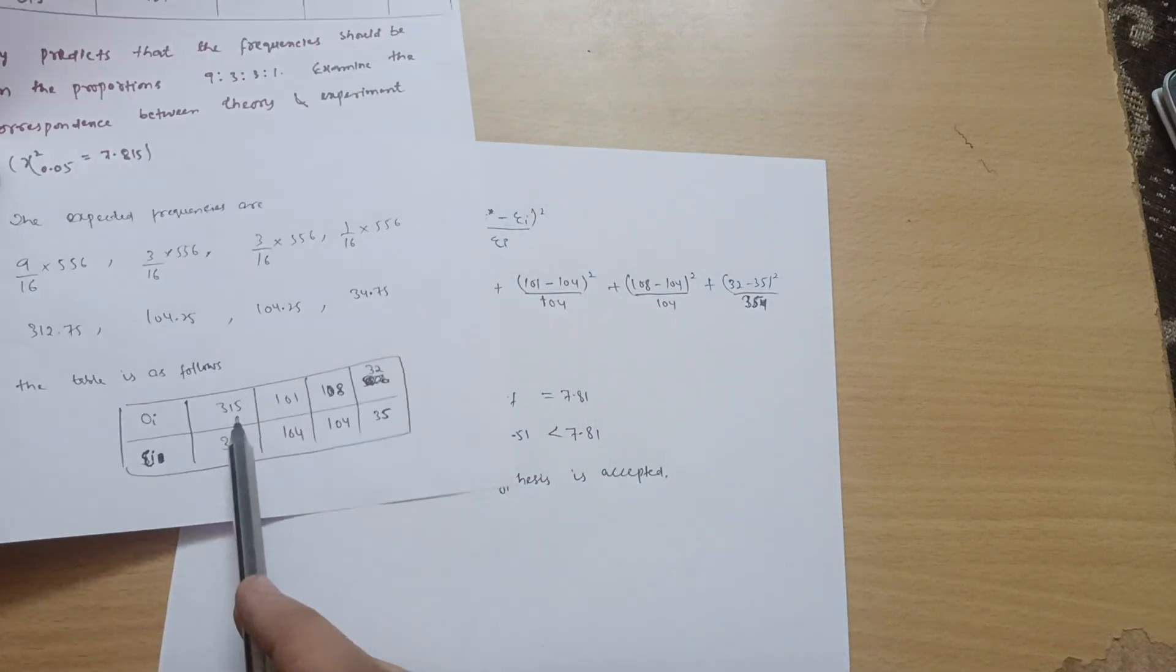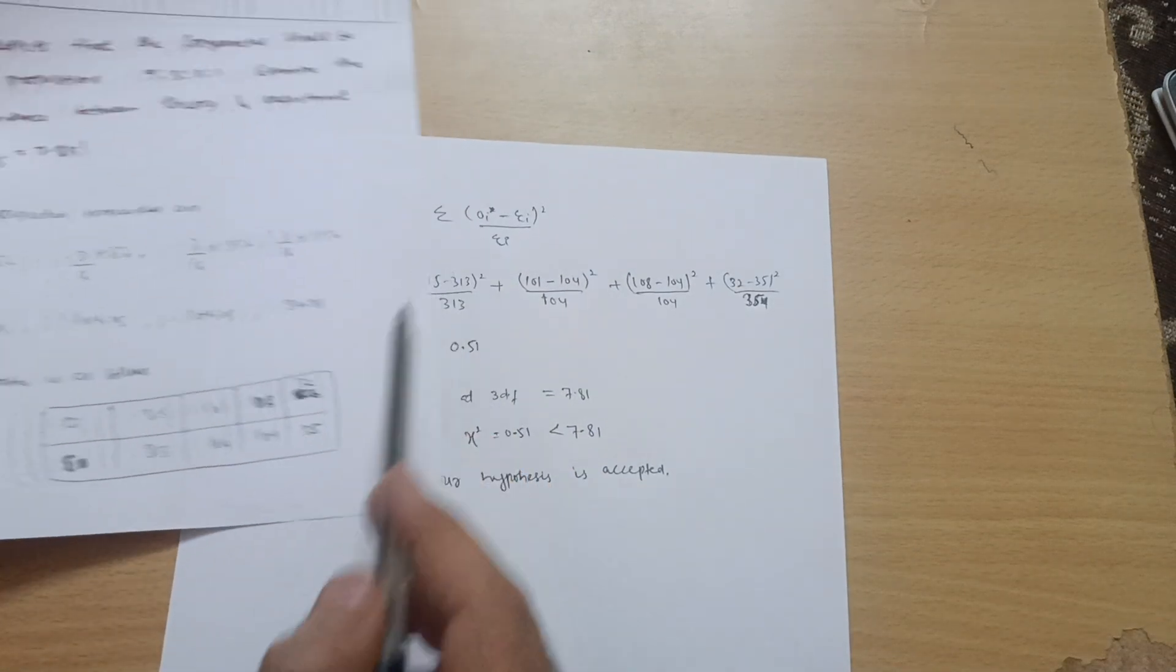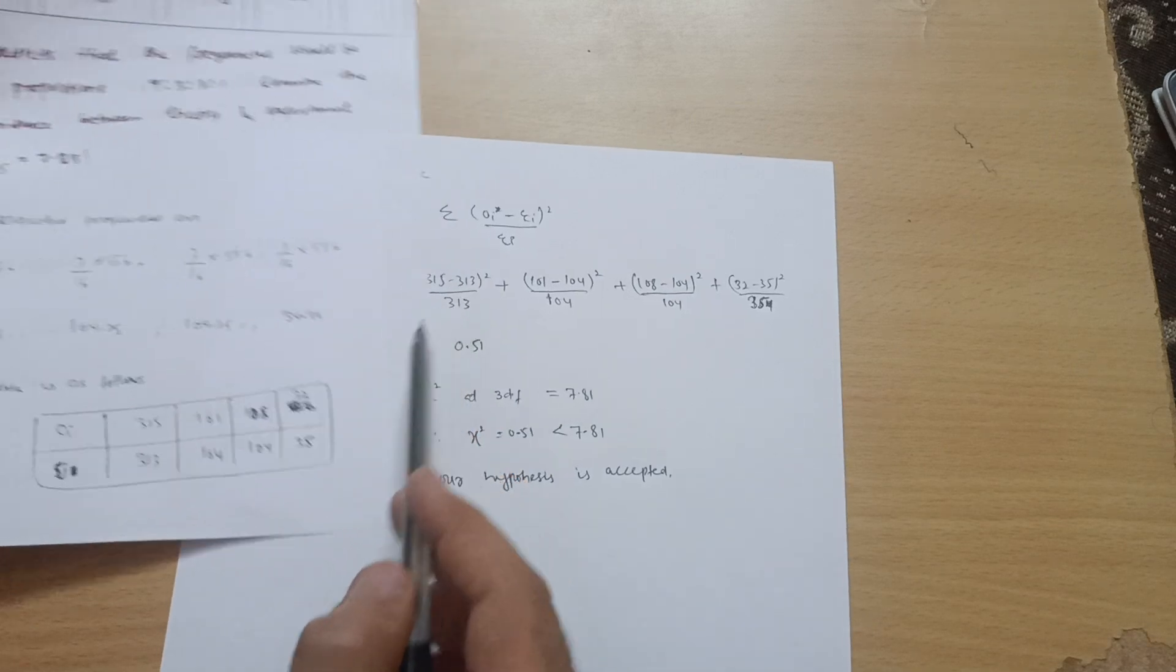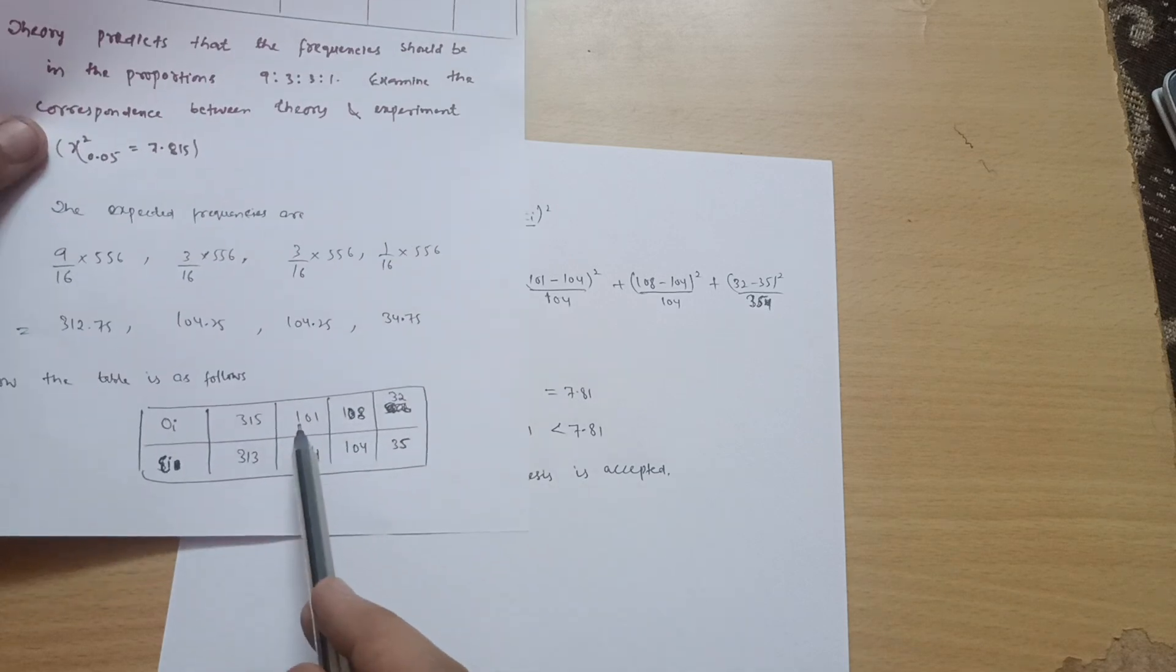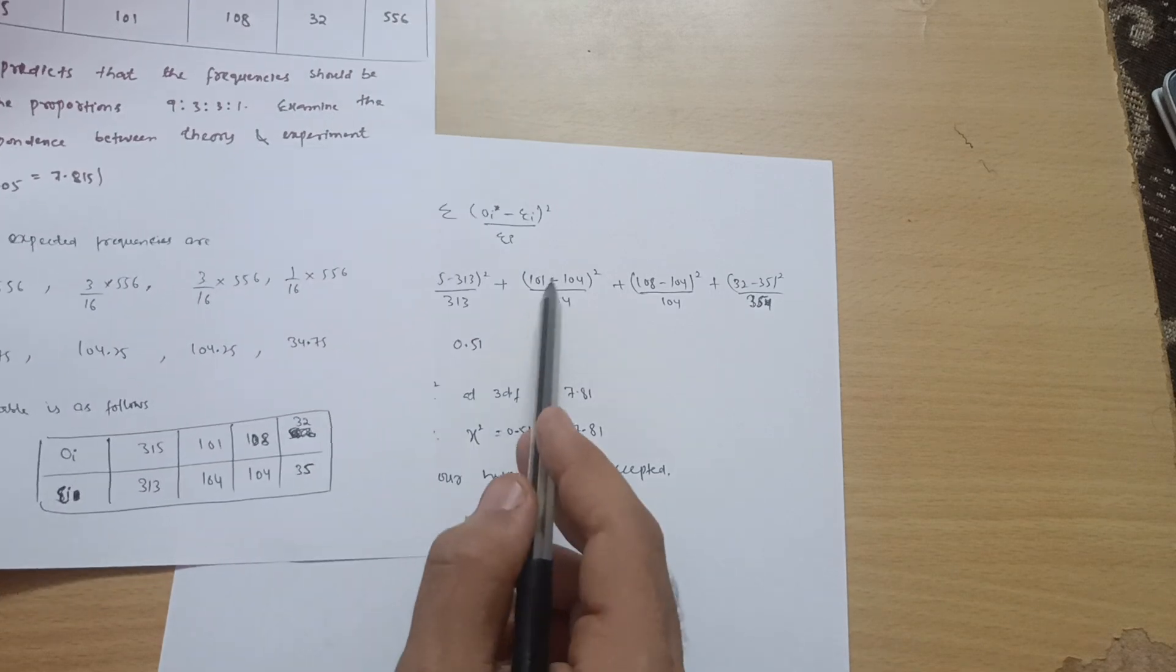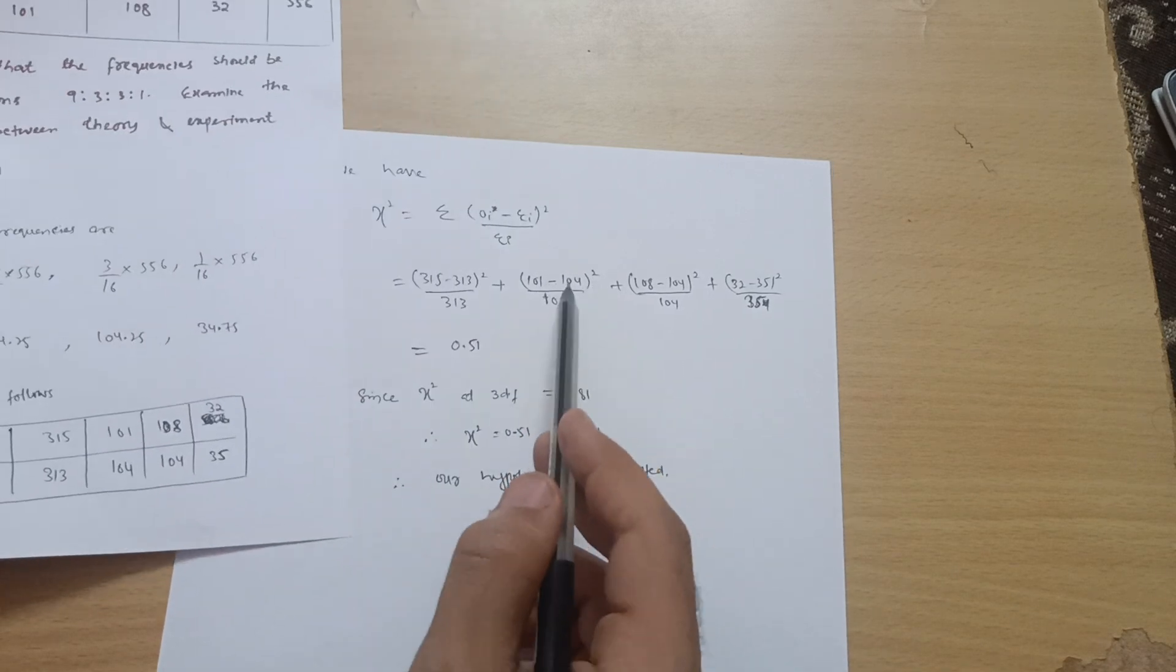So what is the Oi value? 315. So 315 minus 313 whole square divided by 313, plus 101 minus 104 whole square divided by 104.